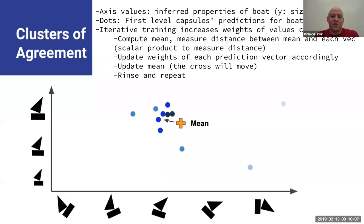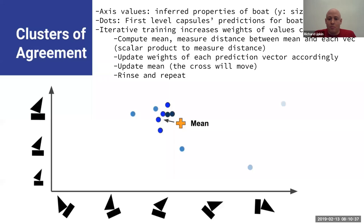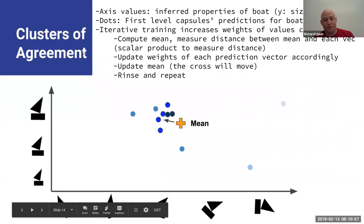The features that routing by agreement provides are clean inputs, a simple hierarchy of parts, and it helps parse crowded scenes. The routing by agreement is iterative. On the y-axis we have size, and x-axis we have rotation. The dots are the first-level capsule predictions, and the iterative training increases the weights of the values close to the mean. You first find the mean, then change the weights, increasing them close to the mean, then update the mean. You can repeat this for a few iterations until you're happy with the results.